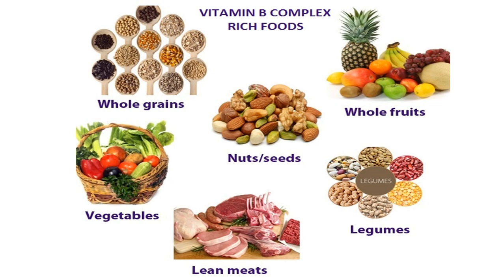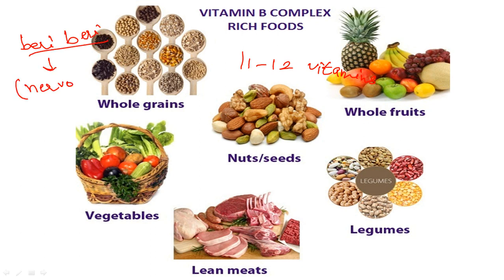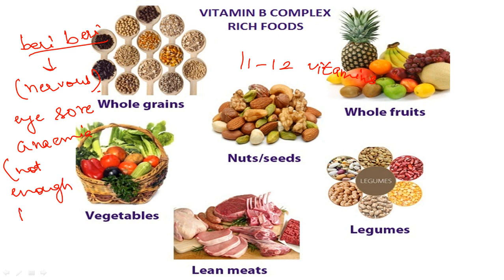Vitamin B is water-soluble. It is a group of 11 to 12 vitamins, which is why it is very complex. Its deficiency causes the disease beriberi, which is related to our nervous system. It also causes eye sores and anemia — anemia means not enough blood in our body. Whole grains, nuts, fruits, and vegetables are the richest sources of vitamin B.